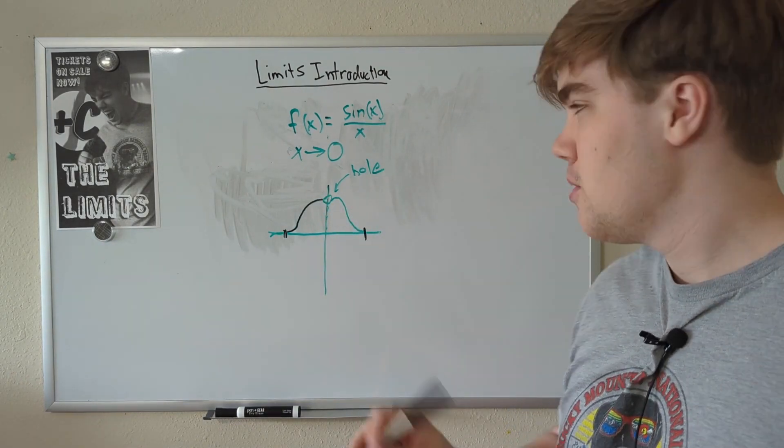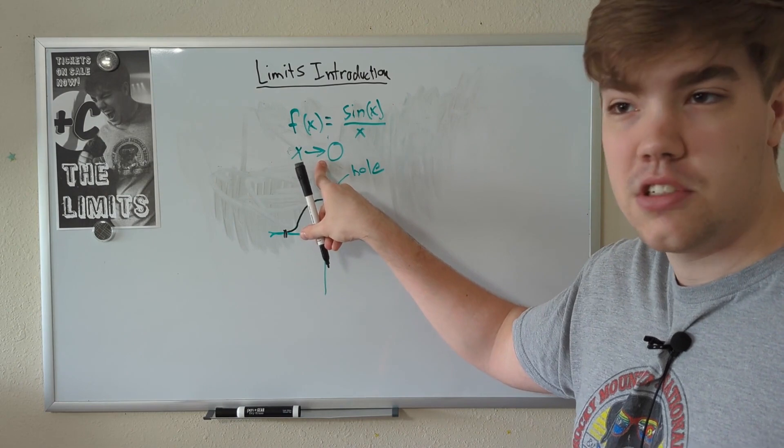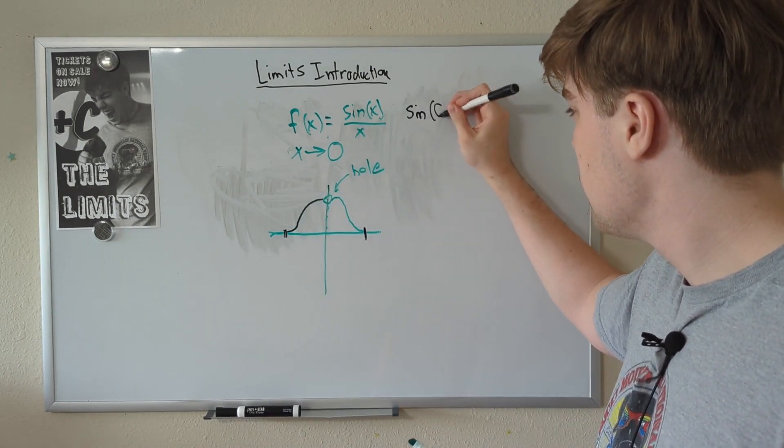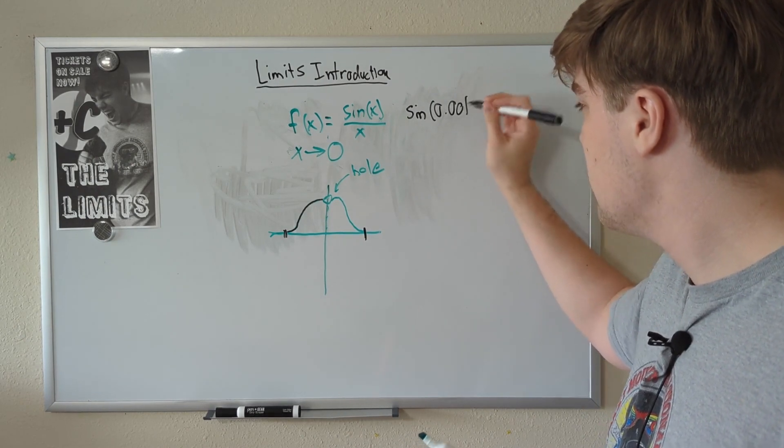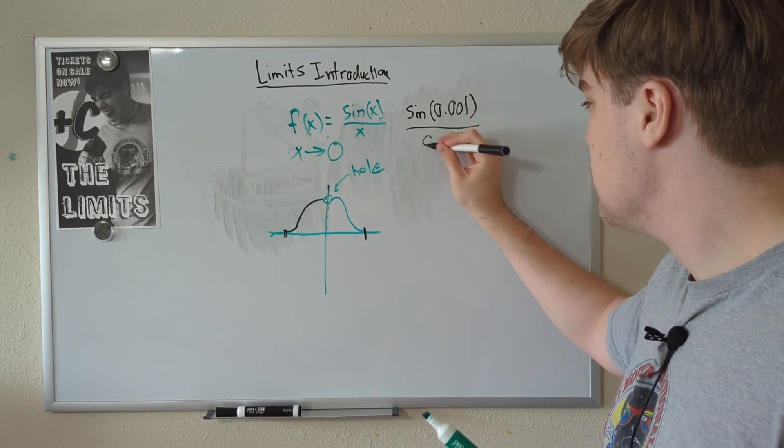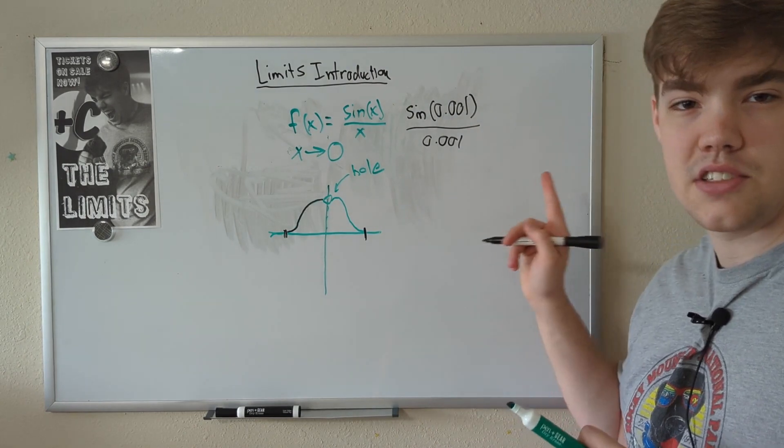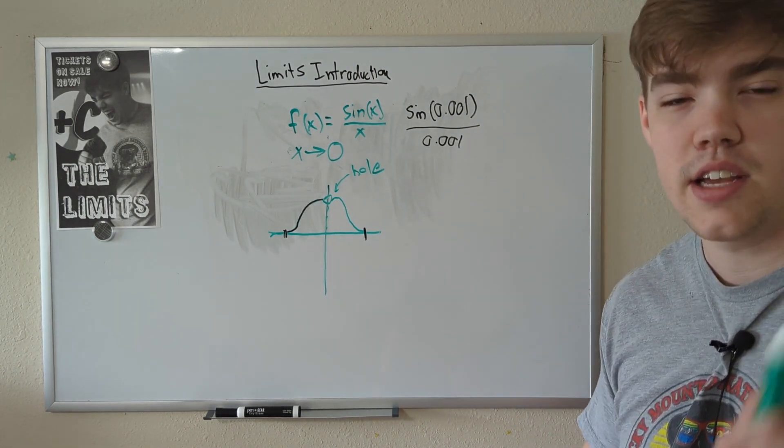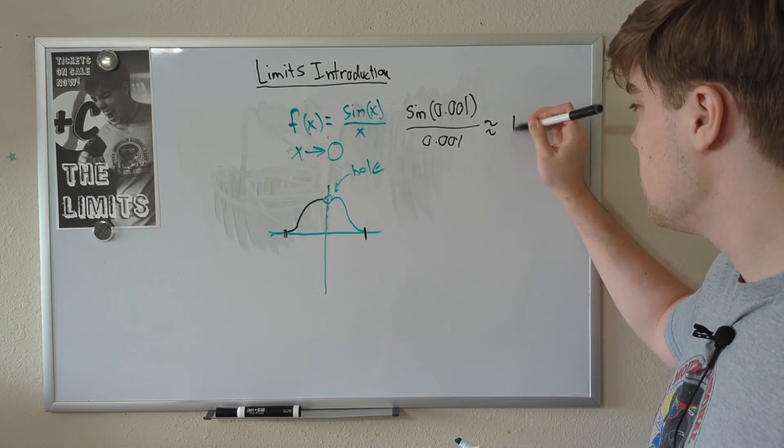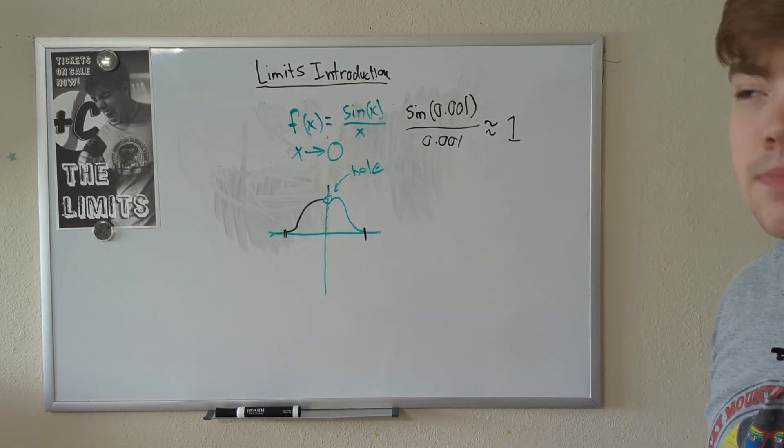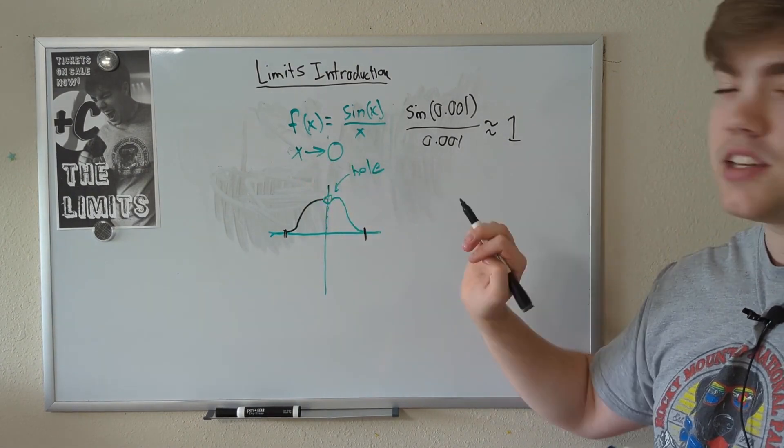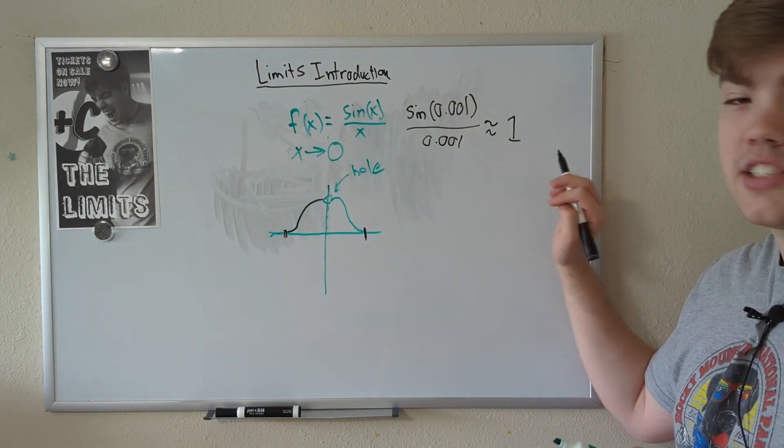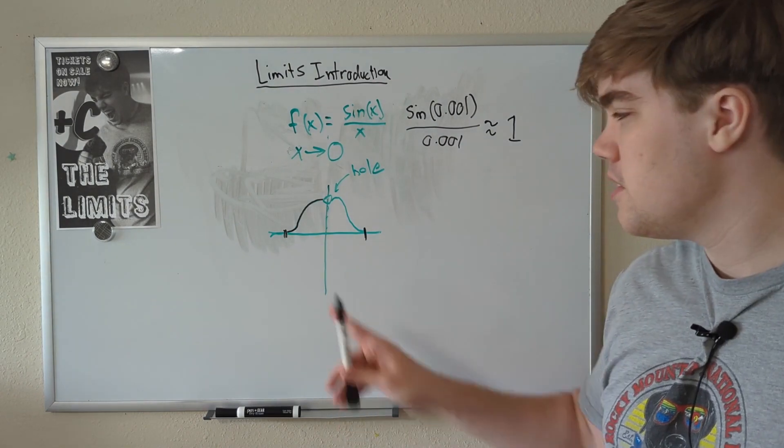So as our line gets closer and closer to equaling x equals 0, what does our y value equal? Well, we can figure this out by plugging in numbers that are very close to 0 to our function. So, let's try something such as sine of 0.001 divided by 0.001. Now, as you can see, we're not dividing by 0 anymore, which means this function is valid. We can figure out what that equals. And this is extremely close to equaling 1. So, the limit as x approaches 0 of our function sine of x divided by x is equal to 1. See? Not too bad. And it's even easy to see visually.